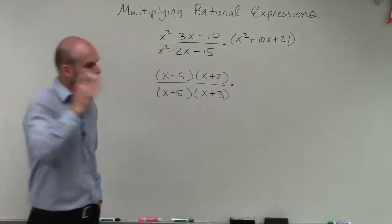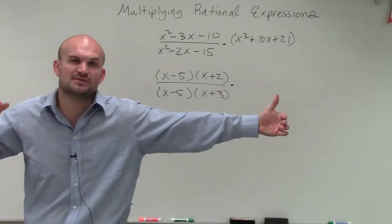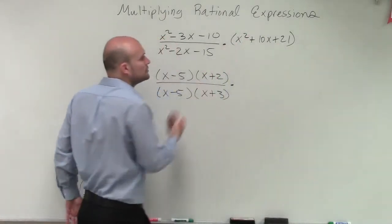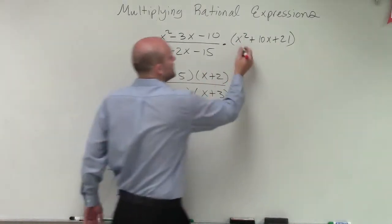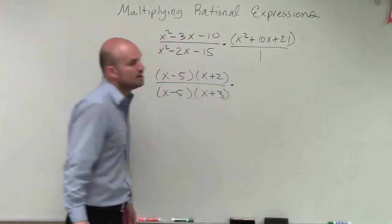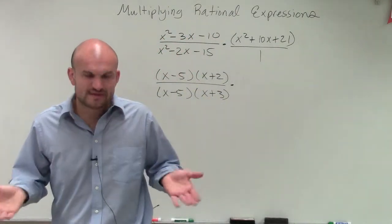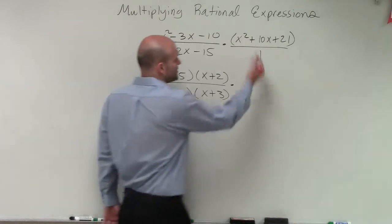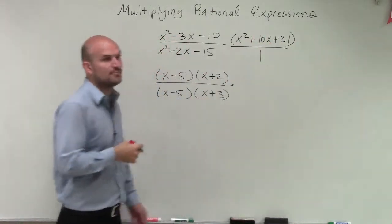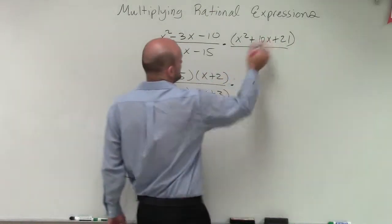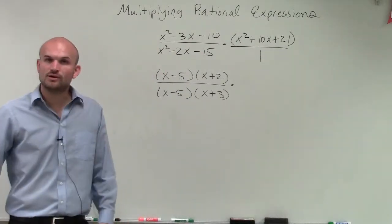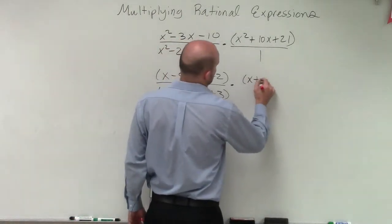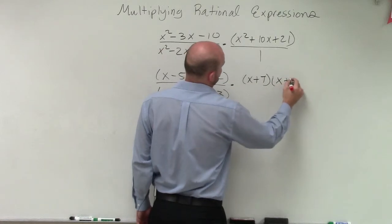Now here is where it gets confusing, because with multiplication we just multiply numerator times numerator and denominator times denominator. So all I have is this term — is it in the numerator or denominator? Well, remember all whole numbers can always be written as a fraction, so we can write it as a fraction by putting it over 1. So I need two numbers that multiply to give me 21 but add to give me 10, which is x plus 7 times x plus 3.